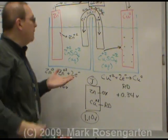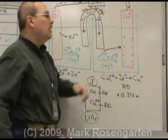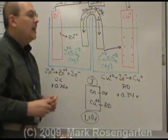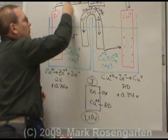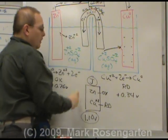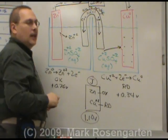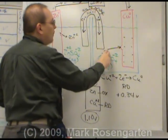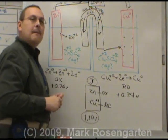Over time, as more zinc leaves and more copper leaves, the voltage will decrease. As there's less copper to attract electrons and less zinc to release electrons, the voltage will decrease. Eventually either all the zinc will get used up or all the copper ions will get used up. When that happens the voltage will reach zero and the battery will be dead.